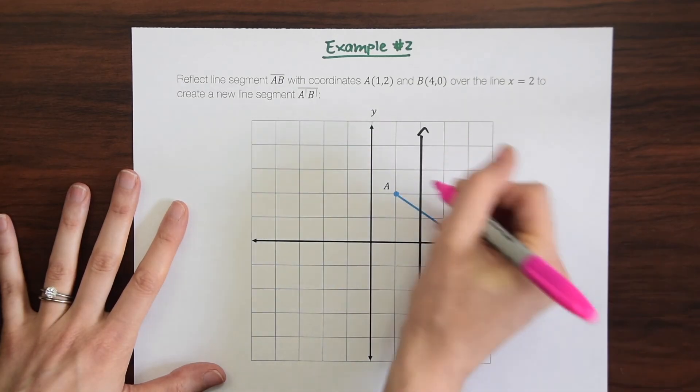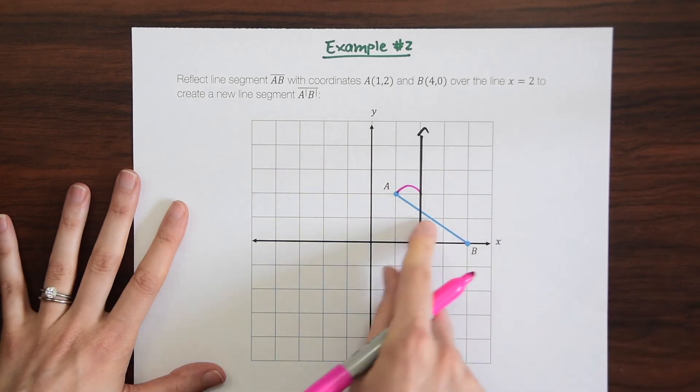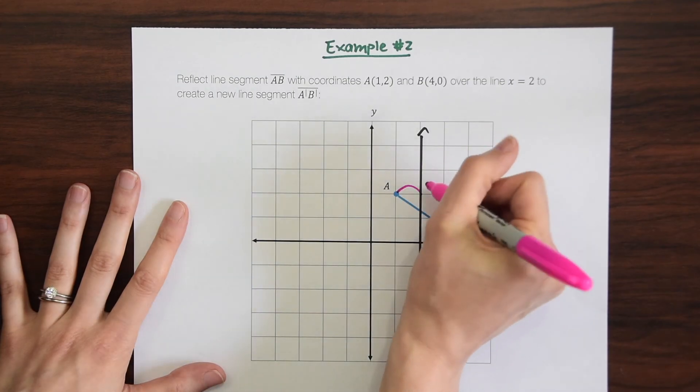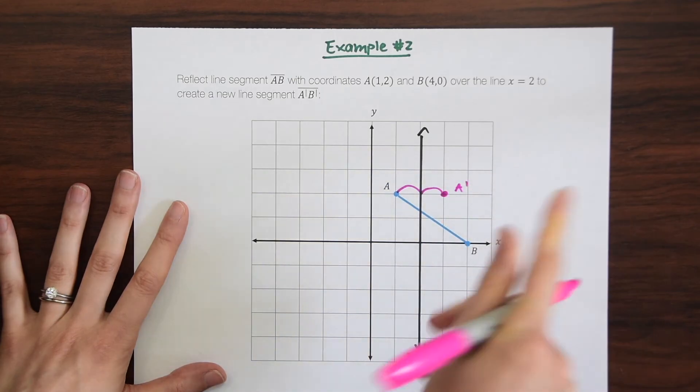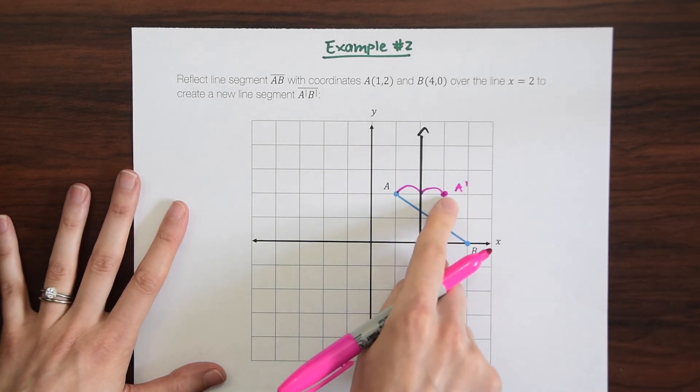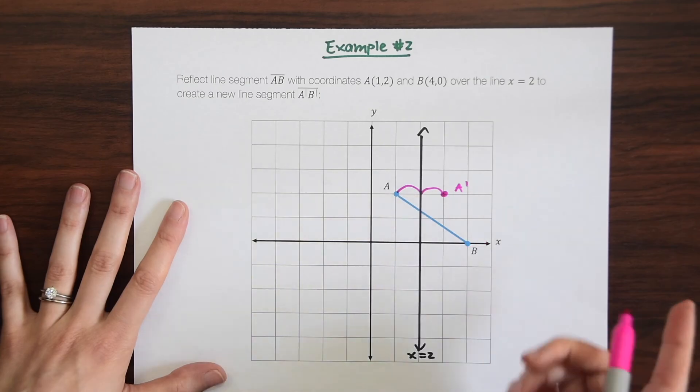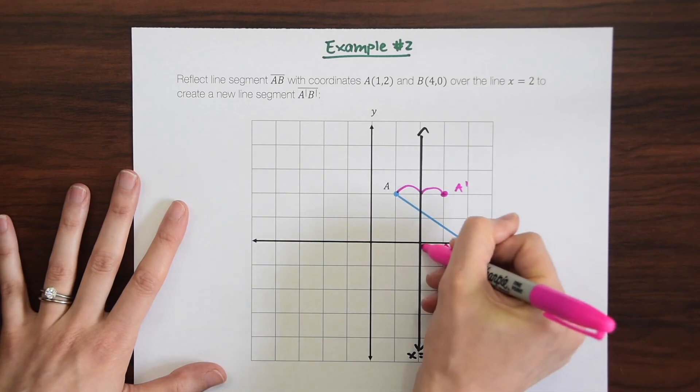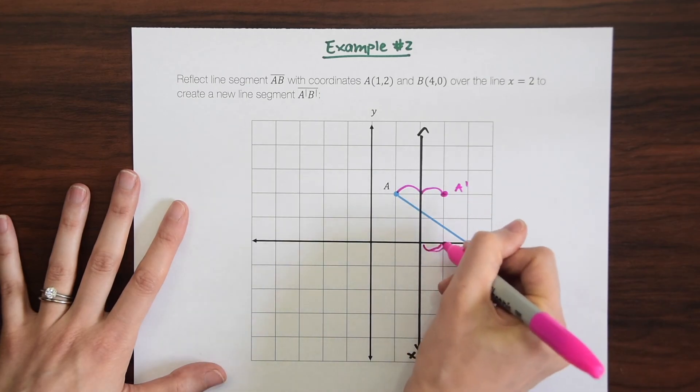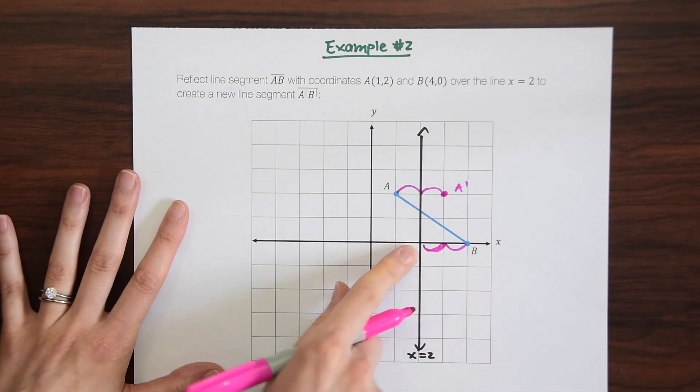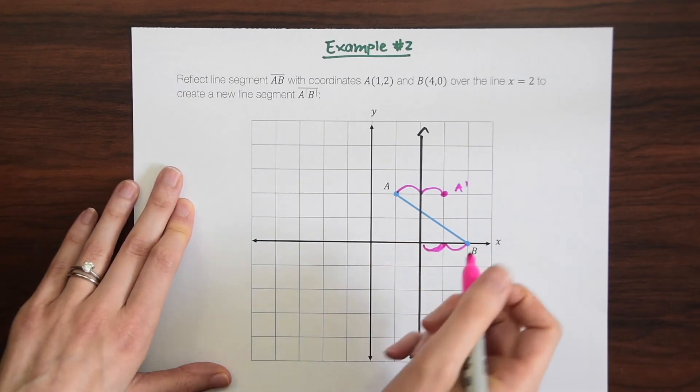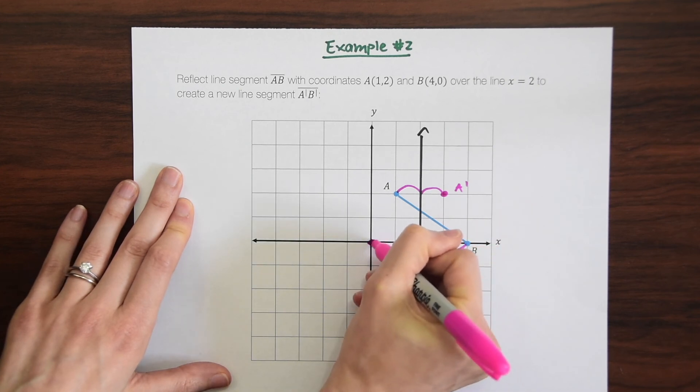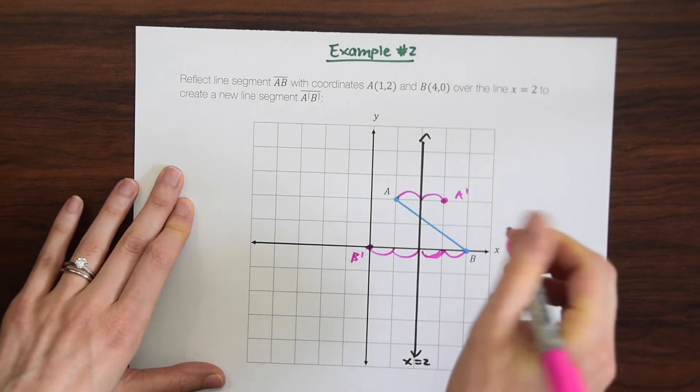But we're going to do this the same exact way. So if you look, if you notice point A is one unit away from x equals 2. So we're just going to go one unit away from x equals 2 to the other side. So this gives us A prime. And point B is two units away from the line x equals 2. It's on the other side, but it's still two units away.